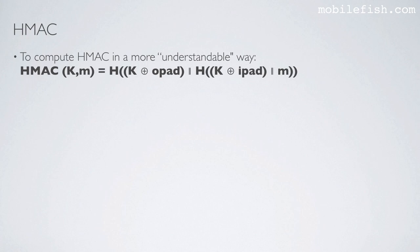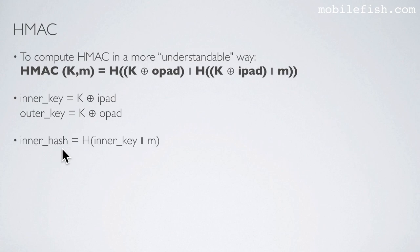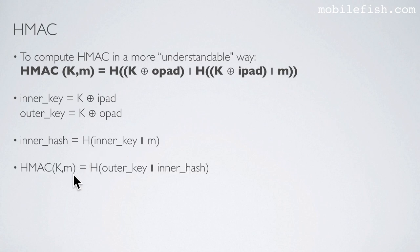To compute HMAC in a more understandable way: First, calculate the inner key, which is the secret key XOR with the inner padding. Next, calculate the outer key, which is the secret key XOR with the outer padding. Next, calculate the inner hash, which is the inner key concatenated with the message and then hashed. Finally, calculate the HMAC, which is the outer key concatenated with the inner hash and then hashed.